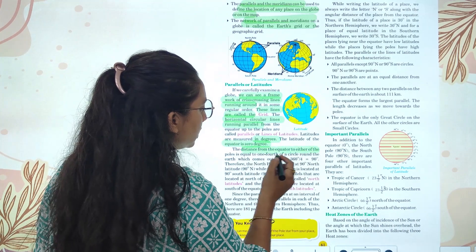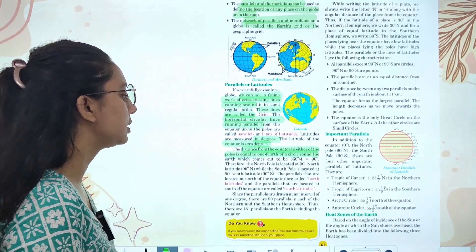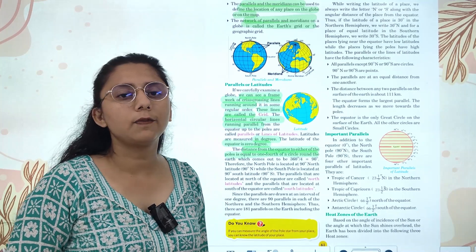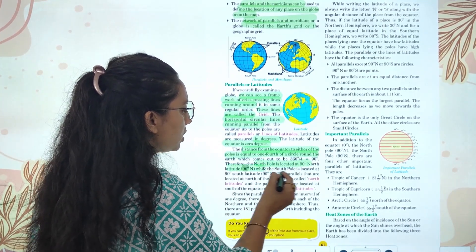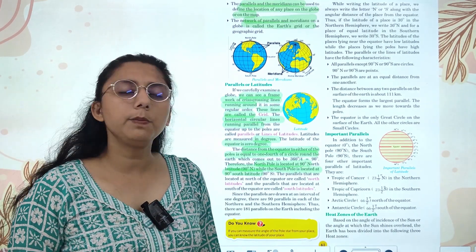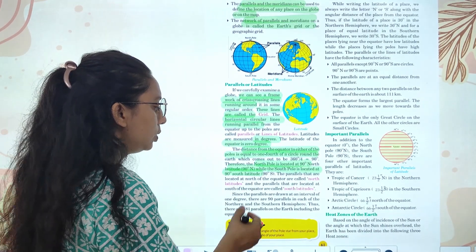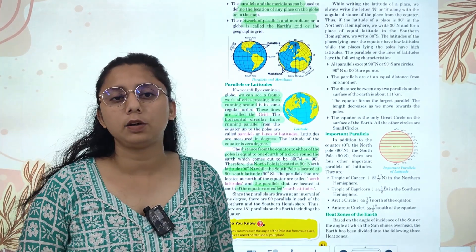The distance from the equator to either of the poles is equal to one-fourth of the circumference. The distance from the equator to north pole is 90 degrees north latitude, and south pole is 90 degrees south latitude. Parallels located in the north are north latitude and parallels located in the south are south latitude.